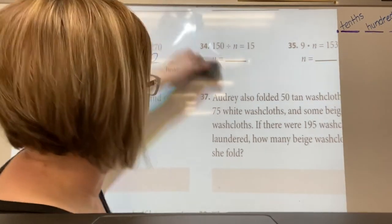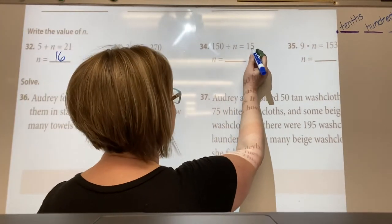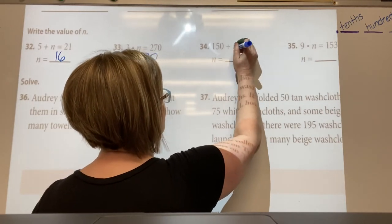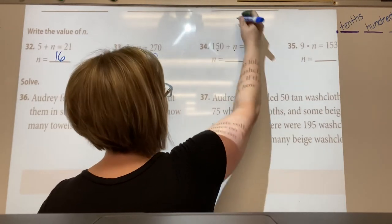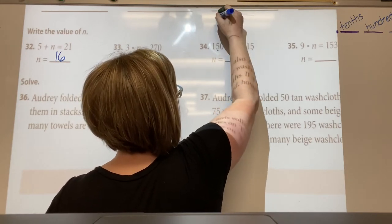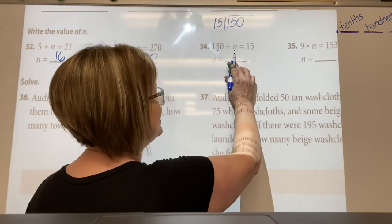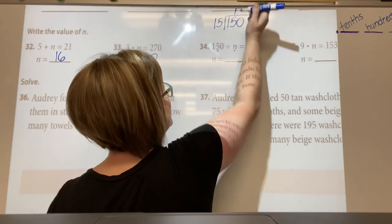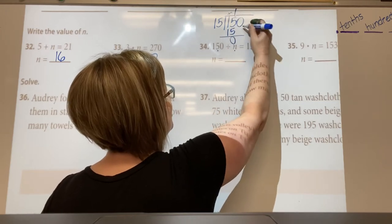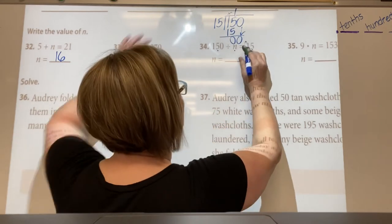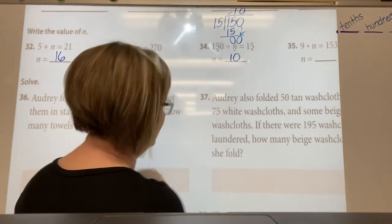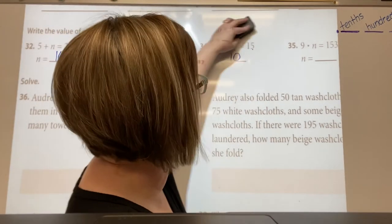Okay, 150. Then 150 divided by n is 15, so we need to do 15 times what will equal 150. So 150 divided by 15 gives us what this answer is. 15 goes into 15 one time, 1 times 15 is 15, bring down 0, 15 goes into 0 zero times, so this is 10.